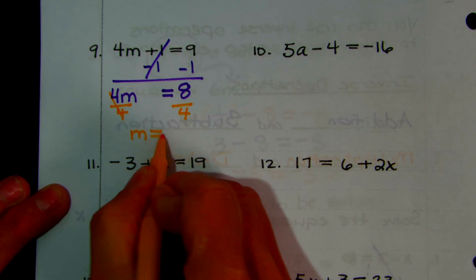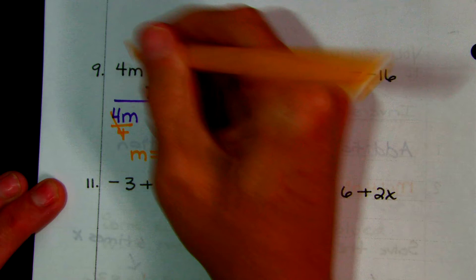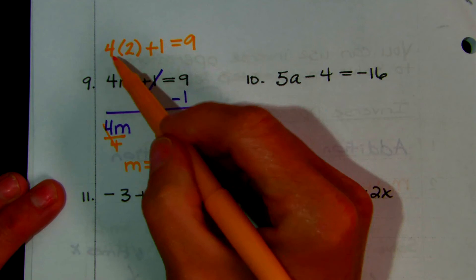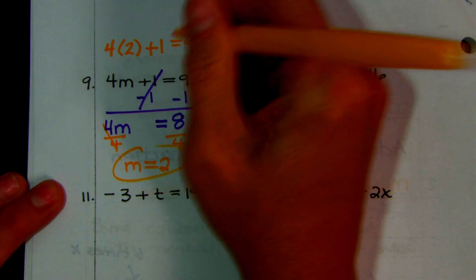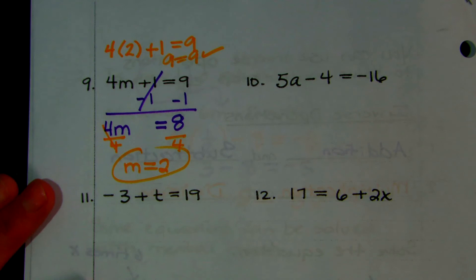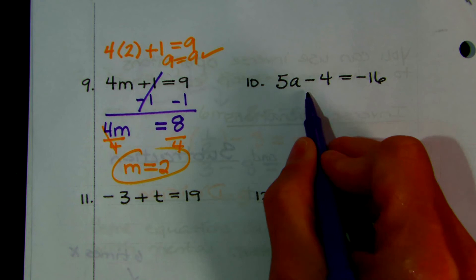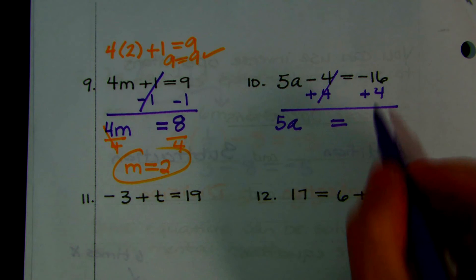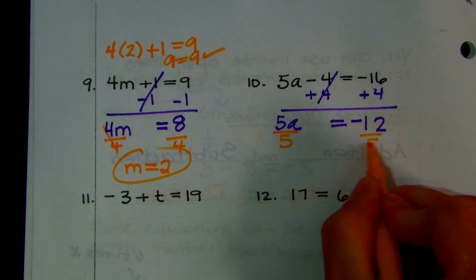You can always check it. Go back to the original problem: 4 times M — put 2 in place of M — plus 1 equals 9. 4 times 2 is 8, 8 plus 1 is 9. So that is the solution. Number 10: 5 times A minus 4 equals negative 16. We need to move the 4 away to isolate A. It's subtraction, so we add. You get 5 times A equals negative 16 plus 4, which is negative 12. Then divide by 5: A equals negative 12 over 5.